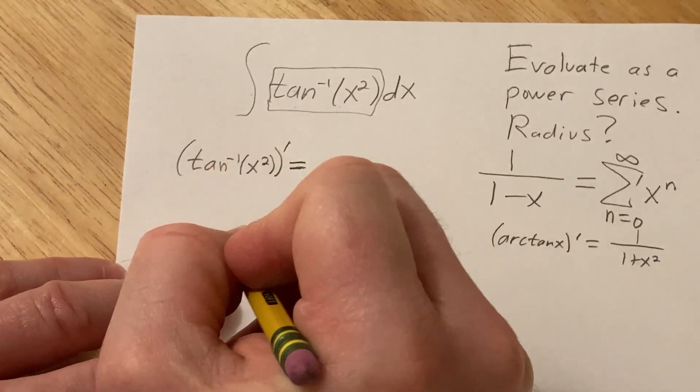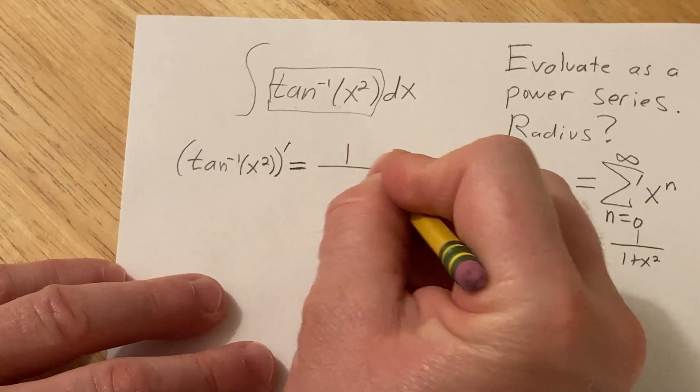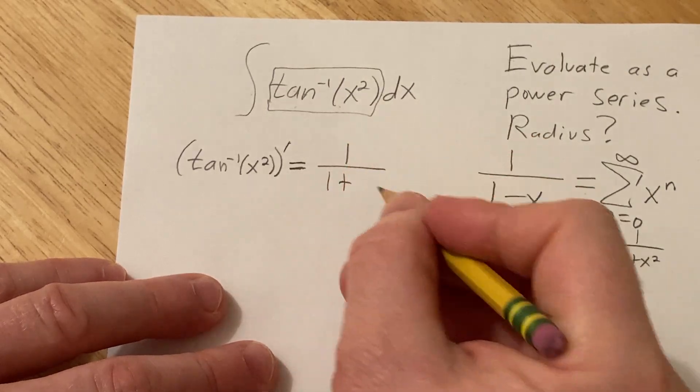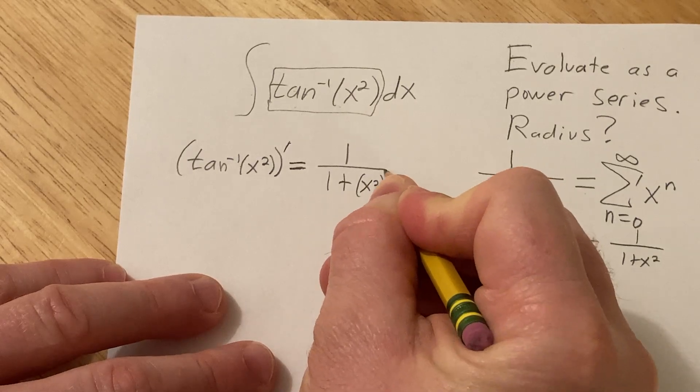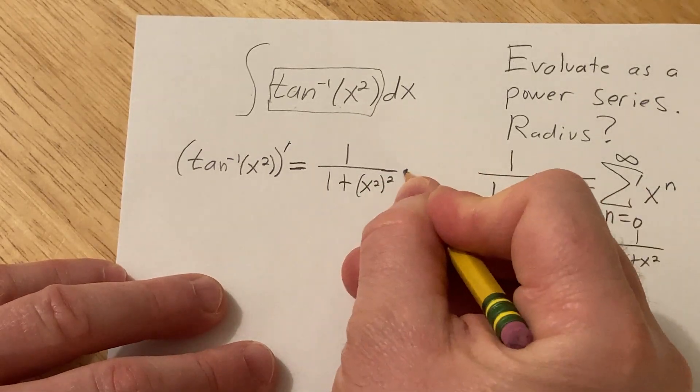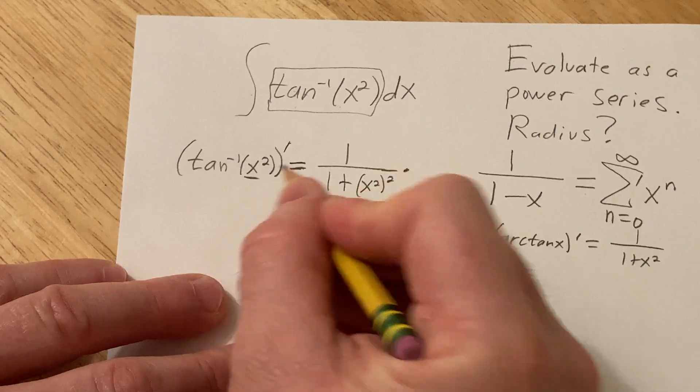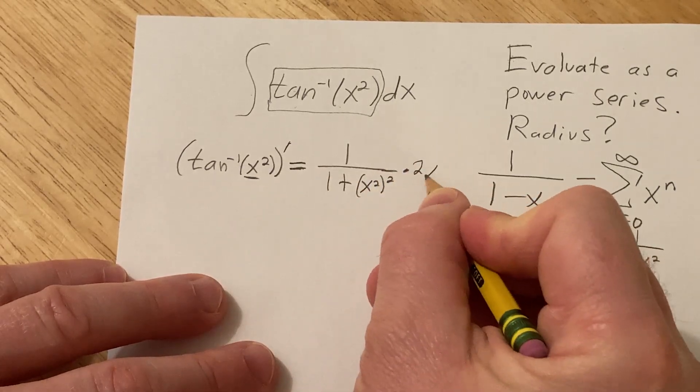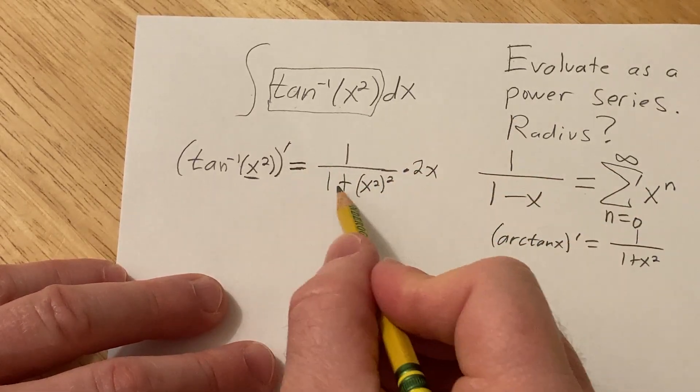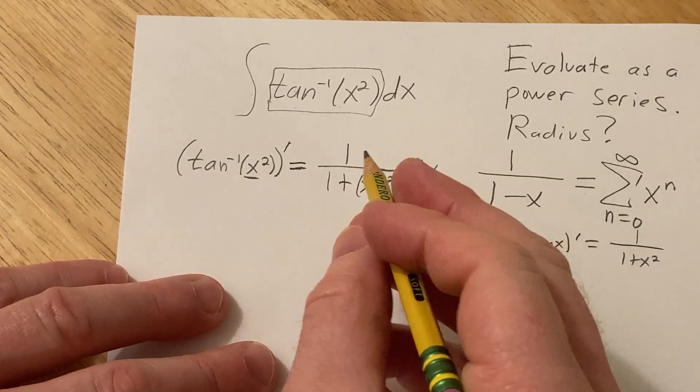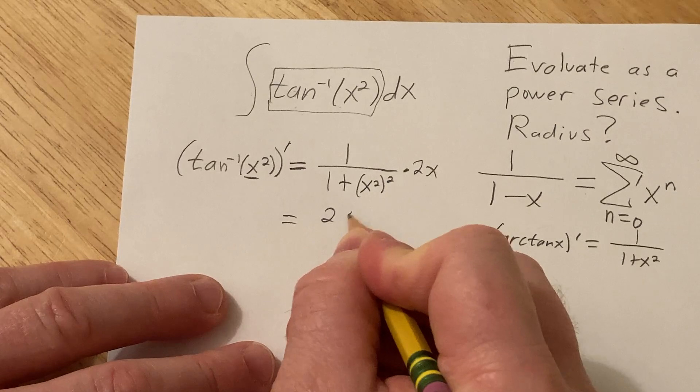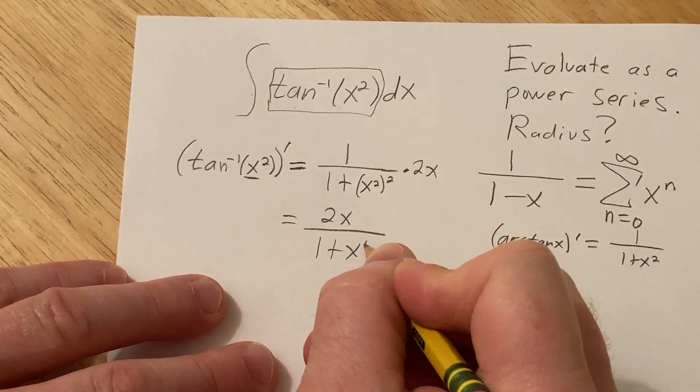So we're taking the derivative using this formula, so it's 1 over 1 plus x squared squared, right, using the formula times the derivative of the inside function, we're using the chain rule so 2x. You take the derivative of the outside function, that's the formula here, then multiply by the derivative of the inside. So this is 2x over 1 plus x to the fourth.